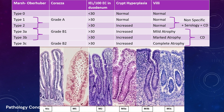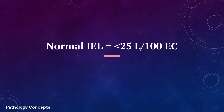The Marsh-Oberhuber classification is divided into three types. Type 1 and Type 2 lesions are characterized by increased intraepithelial lymphocytes — more than 30 lymphocytes per 100 epithelial cells — without or with crypt hyperplasia and normal villi. These are non-specific for celiac disease, but together with positive antibody tests and minimal intestinal lesions can indicate potential celiac disease. The normal intraepithelial cutoff is established at less than or equal to 25 lymphocytes per 100 epithelial cells, better identified with CD3 immunohistological staining.